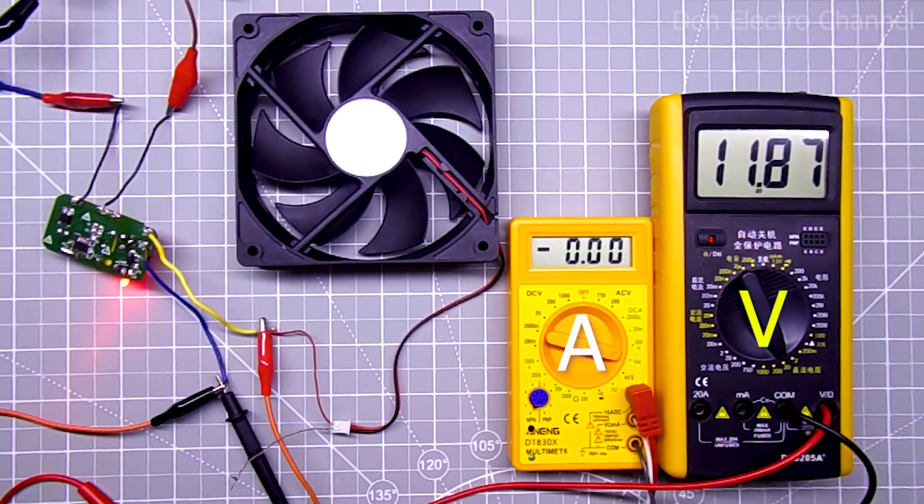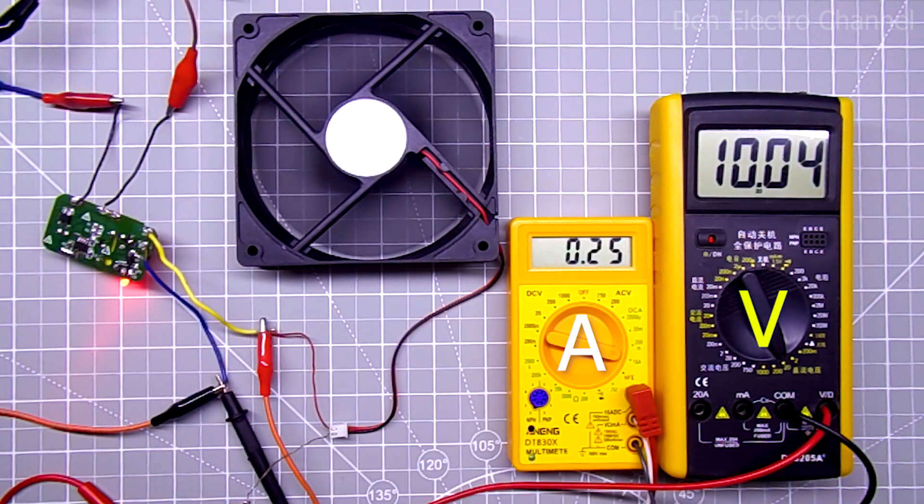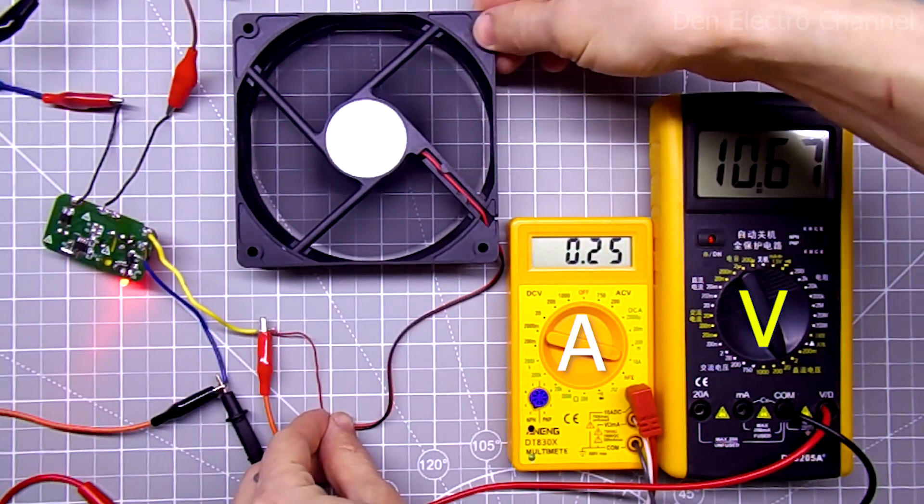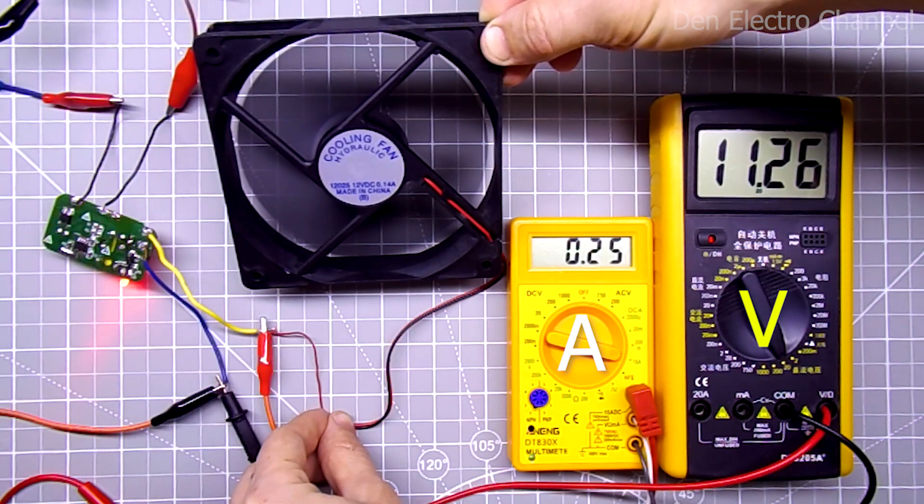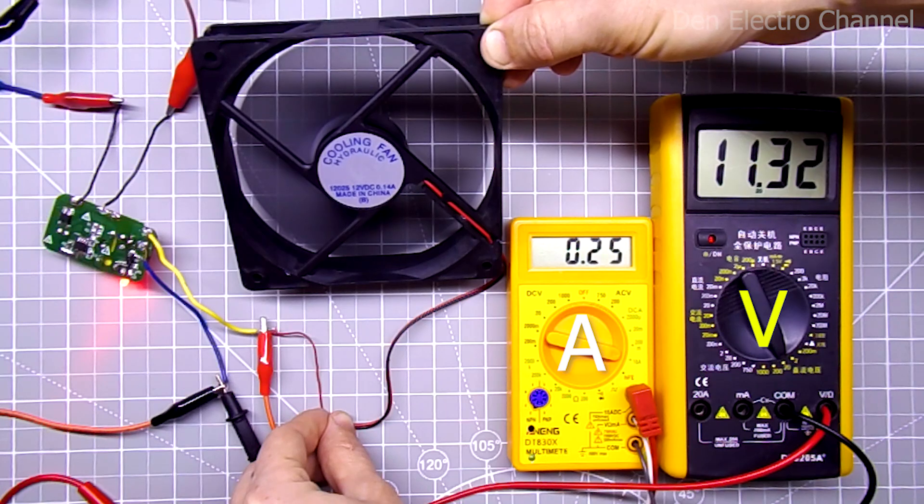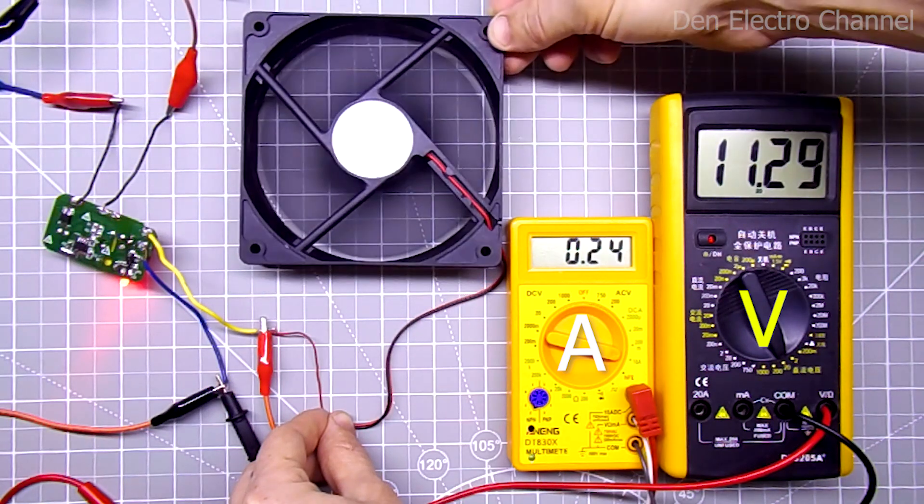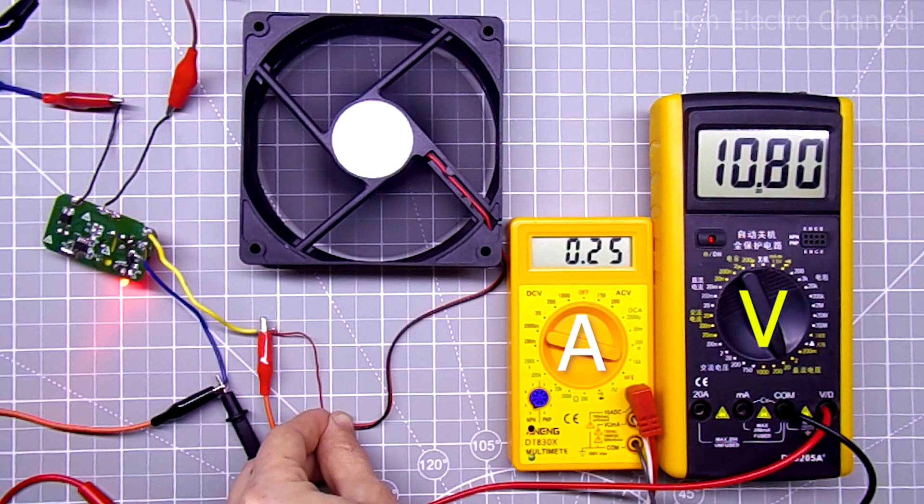Now I'll try a different fan. It is also from a computer power supply, but larger. I turn it on and it uses 250 milliamperes. The voltage dropped to 10.5 volts. When I lift it, it becomes easier for it to work and it consumes a little less current and the voltage increases to 11.3 volts. This fan can no longer support the power supply at 100%. But in general it will do as a last resort. At 11 volts the fan also works fine.